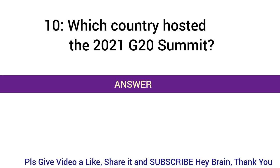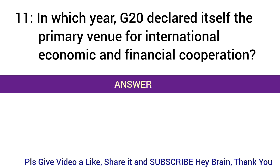Which country hosted the 2021 G20 summit? Answer: Italy. In which year did the G20 declare itself the primary venue for international economic and financial cooperation? Answer: 2009.